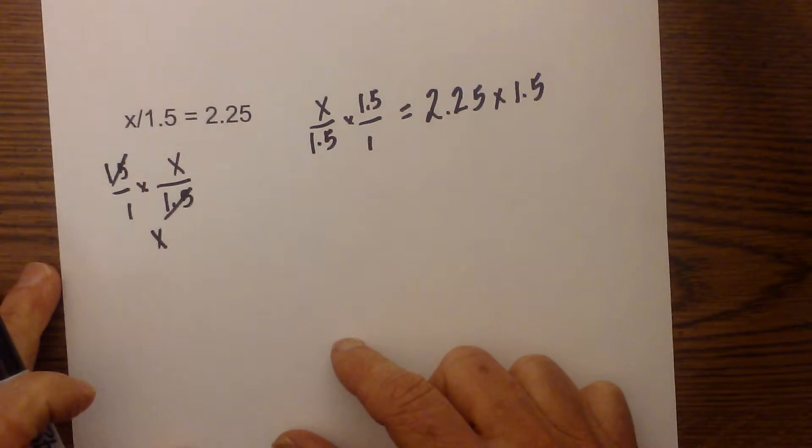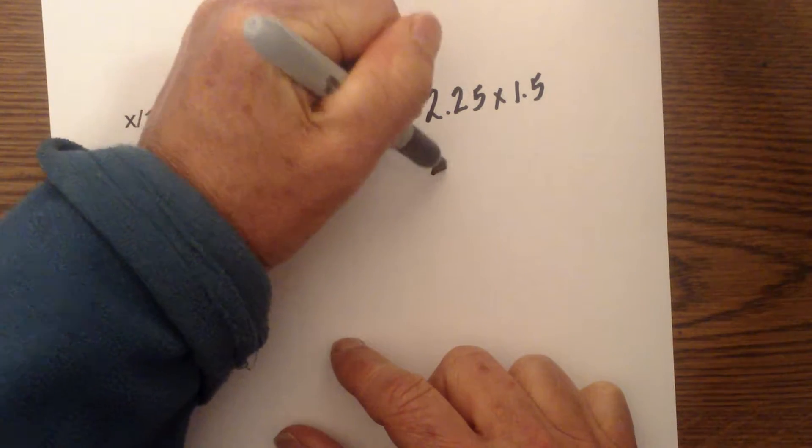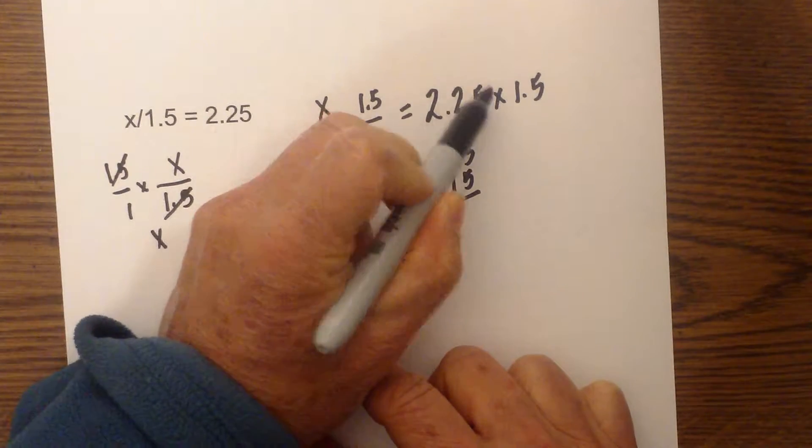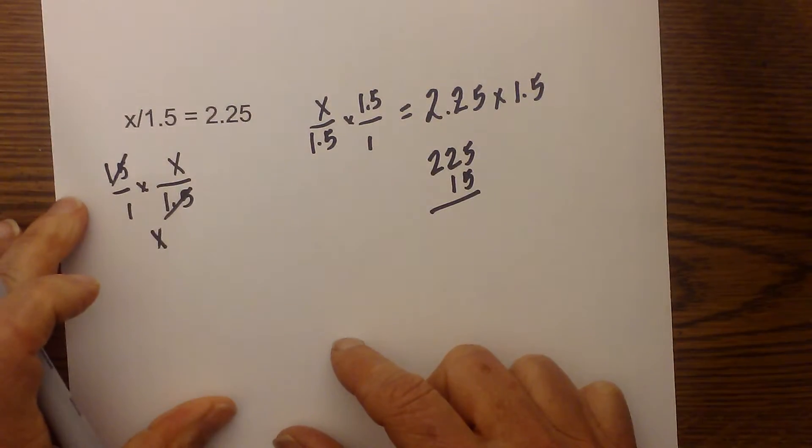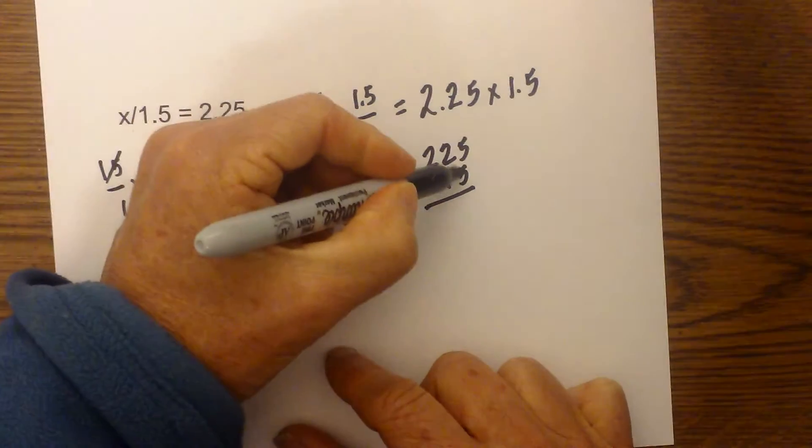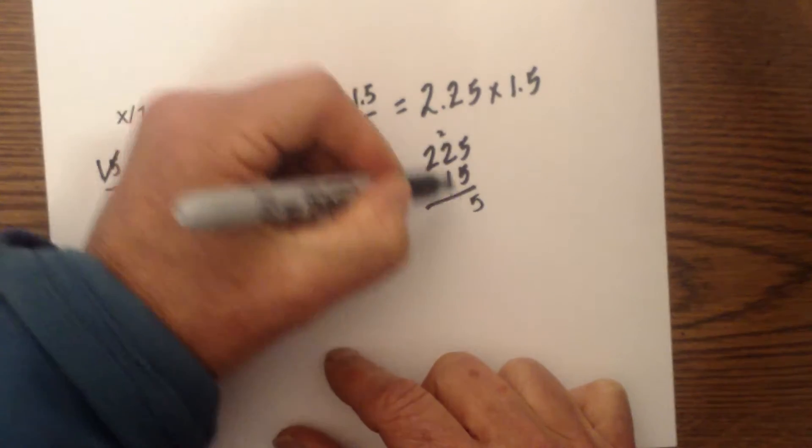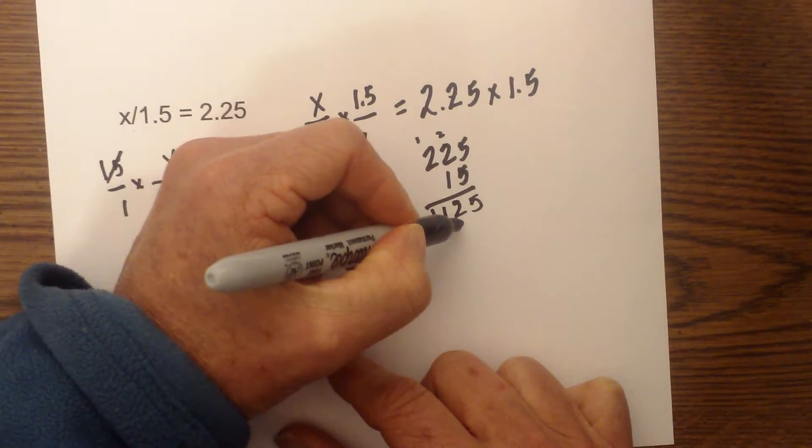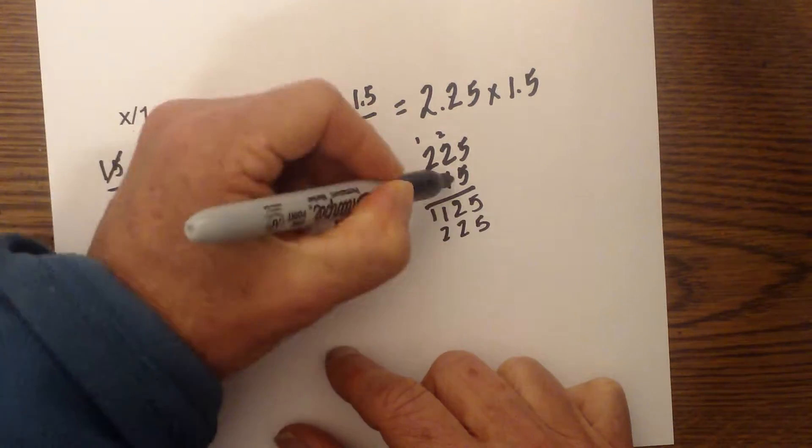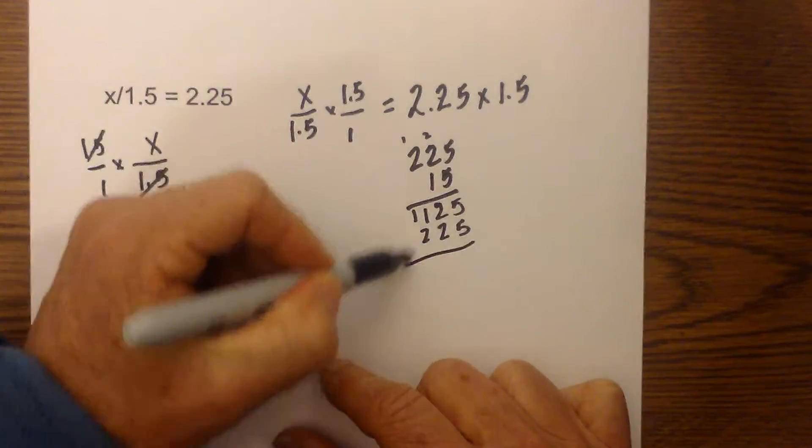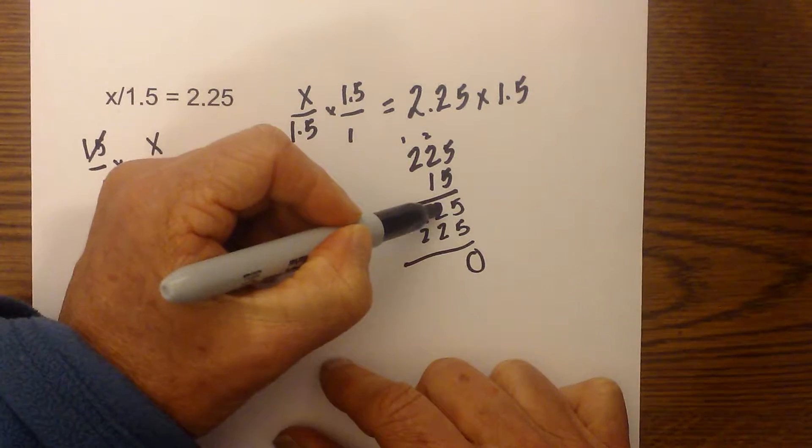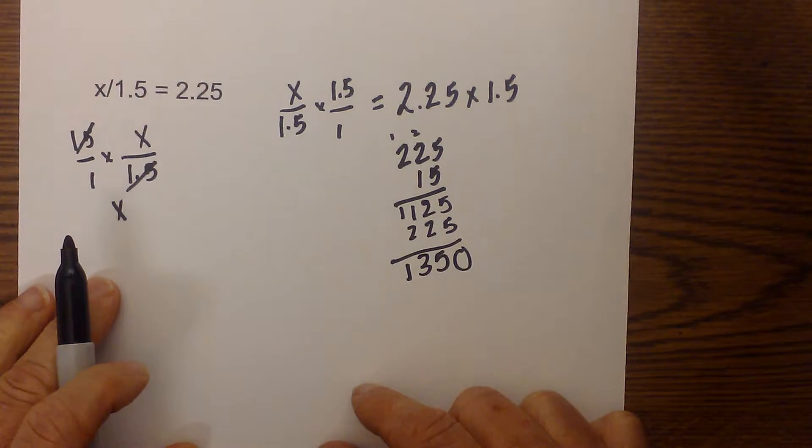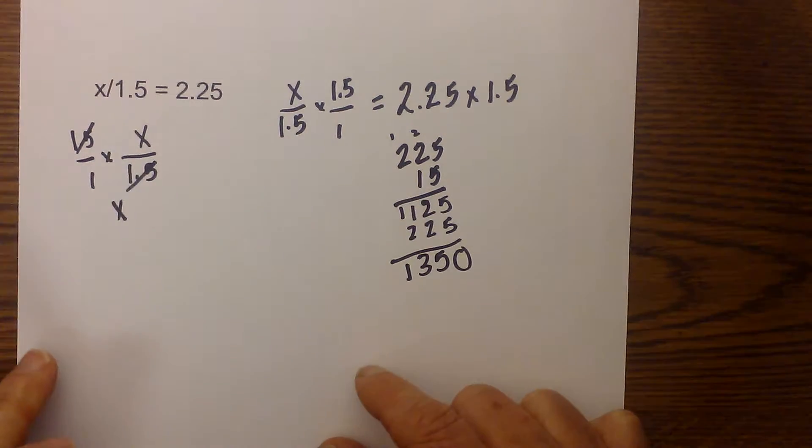Now when you multiply decimals what I like to do is I like to just act as if there are no decimals. So it will be 225 times 15. But before I count how many numbers are to the right of the decimal. And I have 1, 2, 3. And in your answer you must have the same thing. So when I multiply this 5 times 5 is 25. Carry the 2. That becomes a 12. Carry the 1, 11. And then this is pretty easy. We have 5, 2, 2. Because 1 times 5 is 5, 1 times 2. And then I add this 5 plus 5 is 10. Carry the 1. That is 4, 5, 3, and 1. So that is 13. Did I do my math correctly? Yes, 1350.